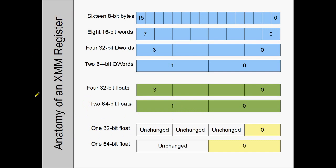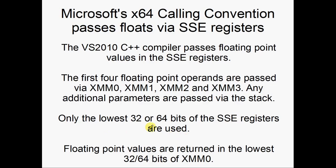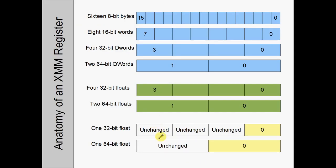The other thing you can do is use these registers as Scalar. SSE is actually both Scalar and SIMD. When you use Scalar instructions, sometimes the top portion of the register is unchanged, other times it's set to zero. The point is that many instructions, instead of operating on SIMD, also have Scalar versions where only the bottom 32 or 64 bits are operated on.